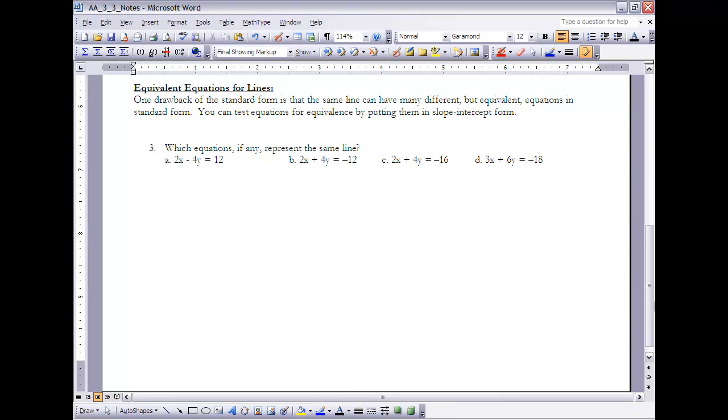Standard form is a great way of working with linear equations. There is one drawback, however, and that one drawback is that when we have something in standard form, there could actually be many equations that are equivalent equations written in standard form. Any equation that is a multiple of another equation would be equivalent. In order for us to check to see if equations are equivalent to each other, what we can do is we can put them in slope intercept form.